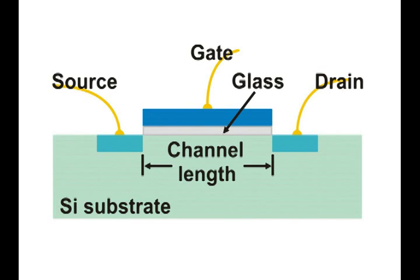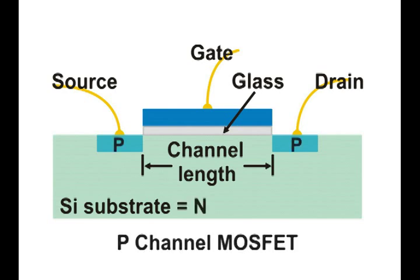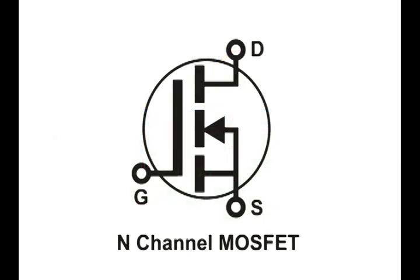The area just below the gate and between the source and the drain is known as the channel. There are two types of MOSFETs. This one is the P channel MOSFET. The one I'm going to be using is the N channel MOSFET. Here is the diagram for an N channel MOSFET.